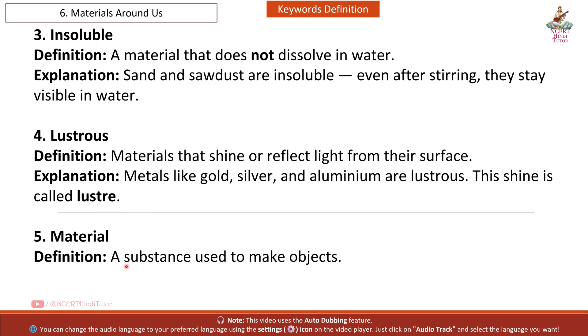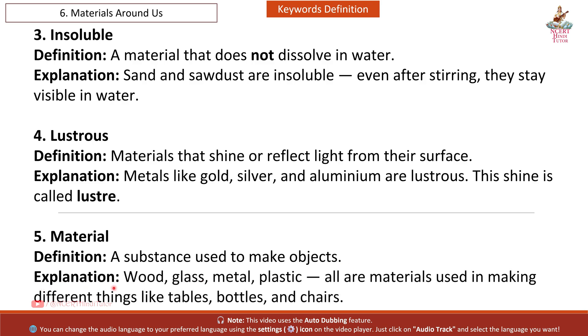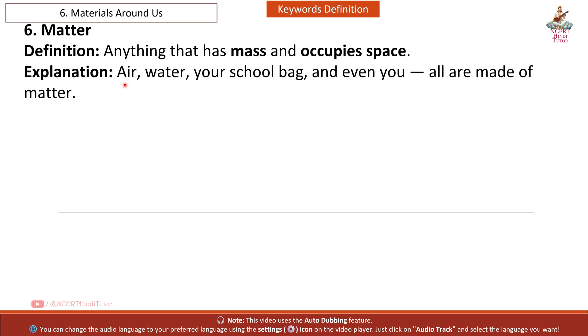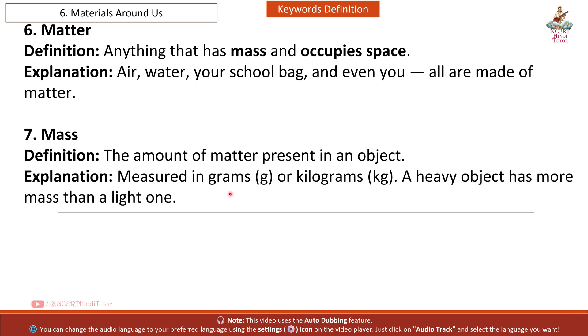Fifth: Material. Definition: a substance used to make objects. Explanation: wood, glass, metal, plastic all are materials used in making different things like tables, bottles and chairs. Sixth: Matter. Definition: anything that has mass and occupies space. Explanation: air, water, your school bag and even you, all are made of matter.